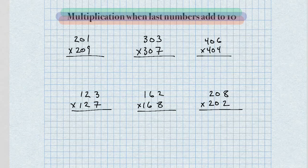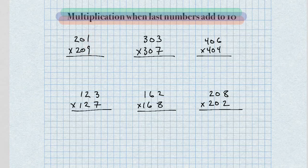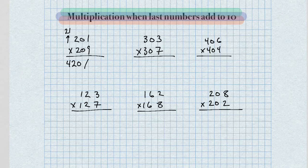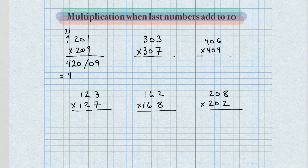Here we're going to use the same method for three-digit, three-by-three multiplication, where everything here is the same number and the last digits add up to 10. What we're going to do is multiply by the next number up — so 20 times 21. For our left-hand side, 20 times 21 equals 420, and 1 times 9 equals 9. In this case, we need two digits for the right-hand side, so our answer equals 42,009.